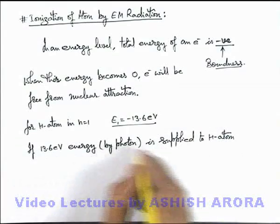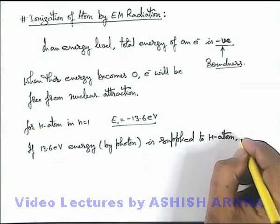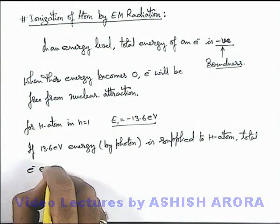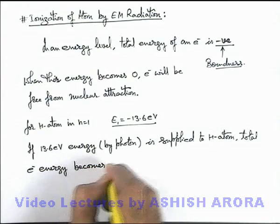And say if this photon is absorbed by the electron, then we can say total electron energy becomes zero.